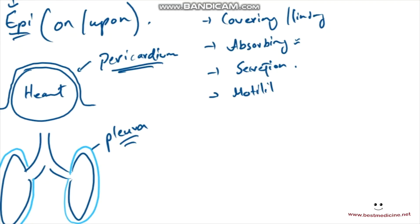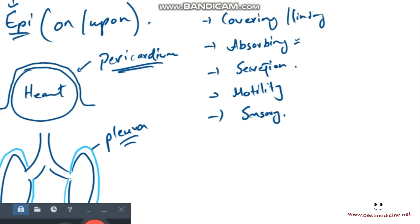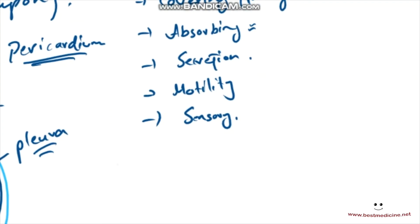And one more function is sensory. There's also sensory epithelia. An example of sensory epithelia would be the epithelia of your inner ear. You'll study that in special senses chapter, which is the last chapter in this series, in which we study the eyes, basically vision and hearing. In that one we will cover the sensory epithelia as well.